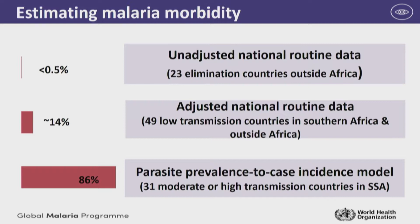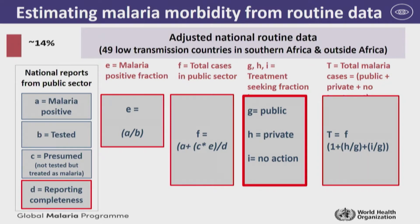But the bulk of the estimates come from one single model, which is the conversion of parasite prevalence to incidence. Focusing on the adjustment of routine data, there are three main things that concern us: the testing rate — what proportion of individuals are tested; the reporting rate — what proportion of reports are received by the country and NMCP from health facilities; and perhaps most importantly, treatment seeking — what proportion of cases are likely to be captured in the public sector.